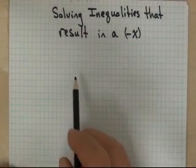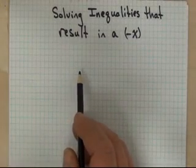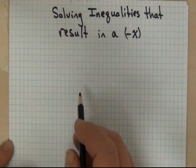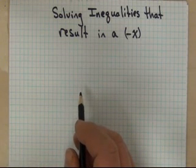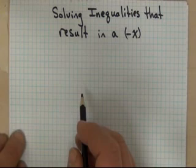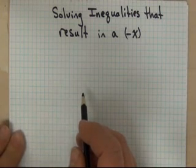I want to take a moment and talk about solving inequalities that result in a negative x towards the last step. They create a special situation for us where we need to take an additional step that we don't need to do when we're solving equations that end in a negative x towards the last step.